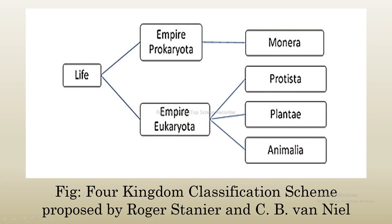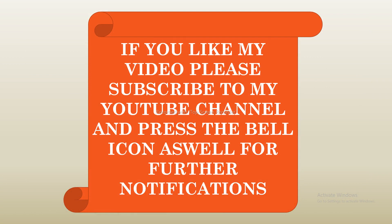Life is divided into two empires: Empire Prokaryota, which includes Monera, and Empire Eukaryota, which is divided into three kingdoms — Protista, Plantae, and Animalia. This is the four-kingdom classification scheme proposed by Roger Stanier and C.B. van Niel, as shown in the figure.